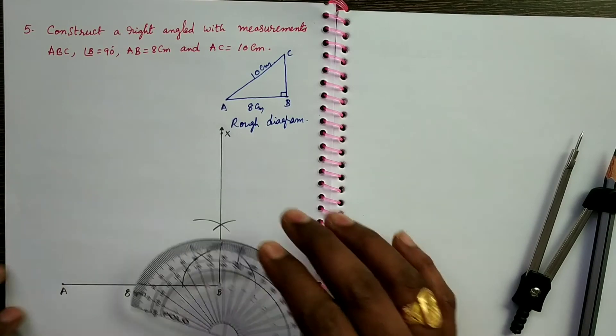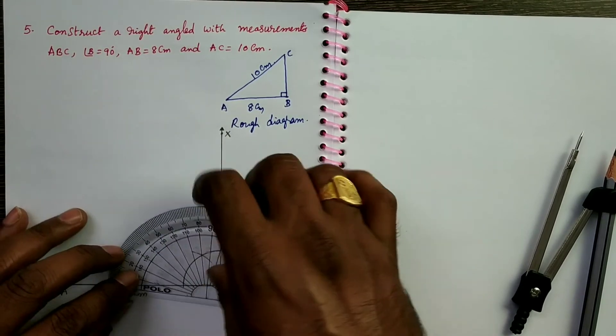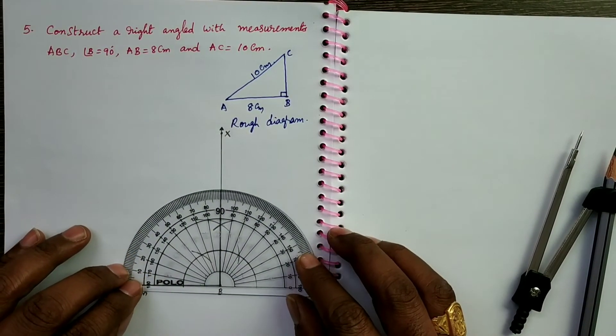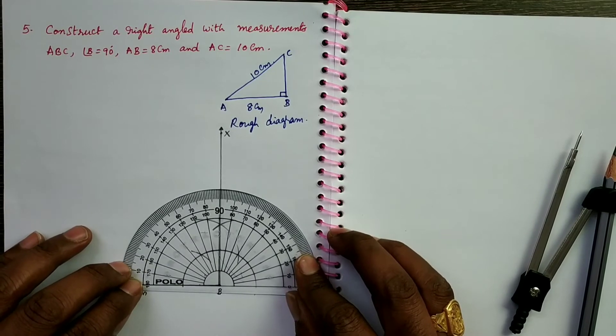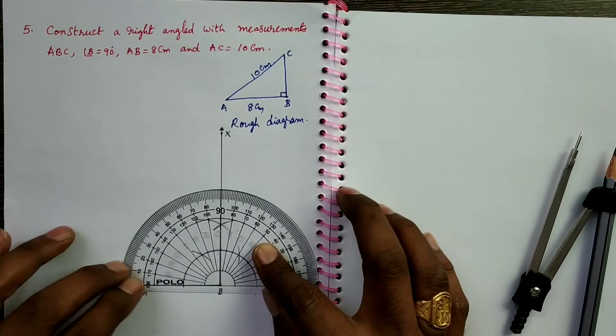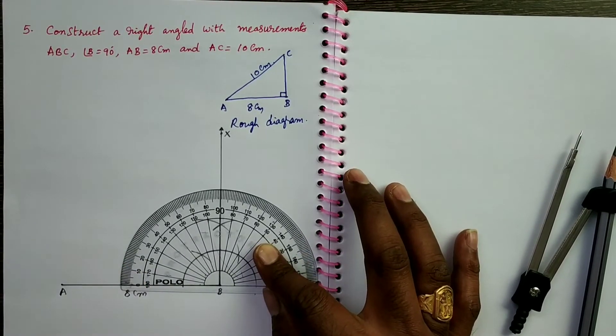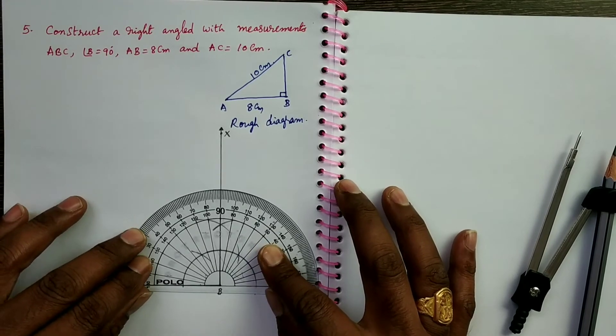Now we can check by using protractor. Keep the protractor like this. So this is exactly 90 degrees. So our construction is correct.